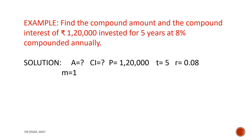M stands for number of times interest compounded in a year. Because interest is compounded annually, M equals 1. Now we calculate I, which equals R divided by M, and N, which equals M multiplied by T. Because in this example M equals 1, so I equals R and N equals T.